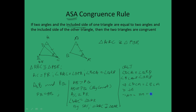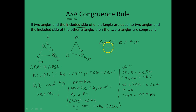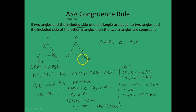Now because AB is equal to PQ, angle A is equal to angle P, and AC is equal to PR, by the SAS congruence rule these two triangles are congruent. The same thing can be proved for AB less than PQ by taking another point on the extended line AB. We will continue with other congruence rules and their discussion along with some other properties of triangles in another lecture. For now, this is all. Thank you.